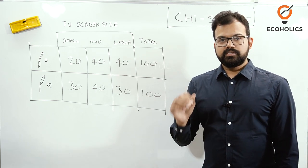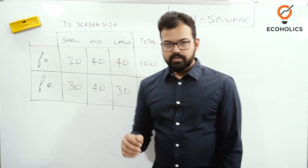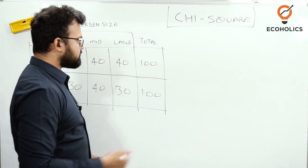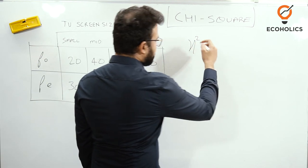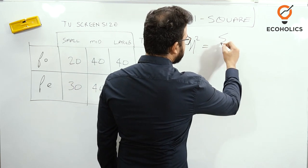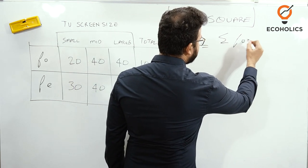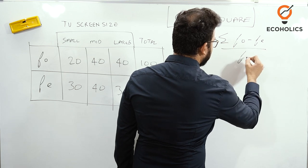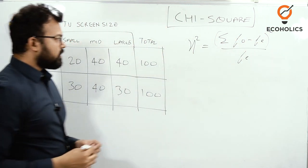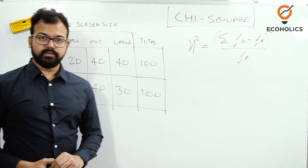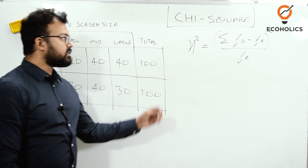First of all, whenever we study any topic of statistics, the first step is to write the formula. On the right side of the screen, I'll write the formula. Chi-square is equal to summation (F₀ - Fₑ)² divided by Fₑ.